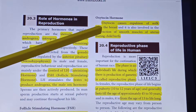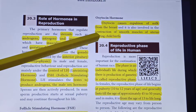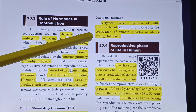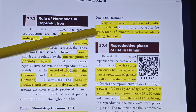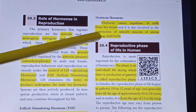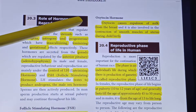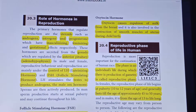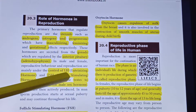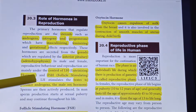Oxytocin hormone is also involved in the contraction of the smooth muscles of the uterus during childbirth. So during delivery time, oxytocin causes uterine contractions. So we have seen interstitial cell stimulating hormone, prolactin, and oxytocin hormone.